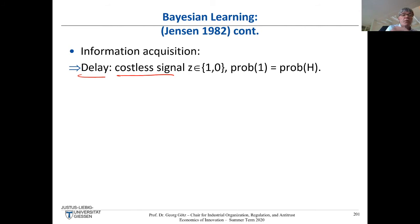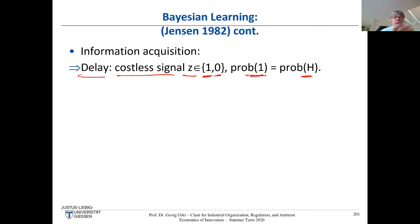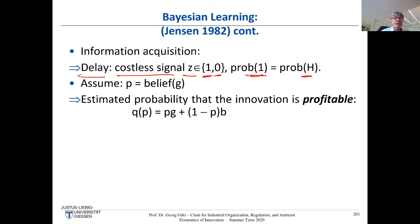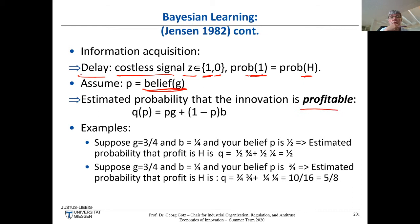There is a delay because you have to wait for a signal, which tells you either it's a high-profit situation or a low-profit one. The probability that you receive a high signal is just the probability that you get a high profit. To determine that probability, you need some belief about how likely the new Windows version is a good or bad innovation. If it's 50%, then your estimated probability Q that the innovation is profitable is derived from that.